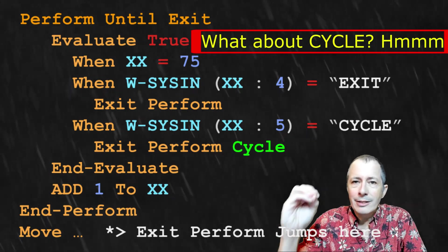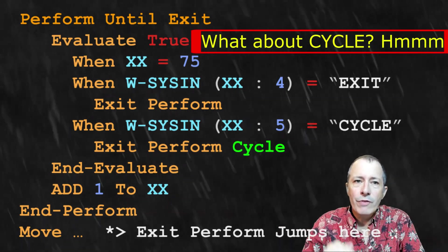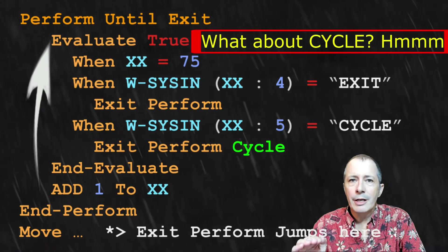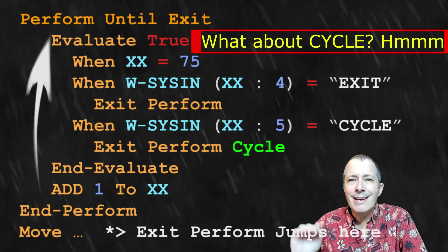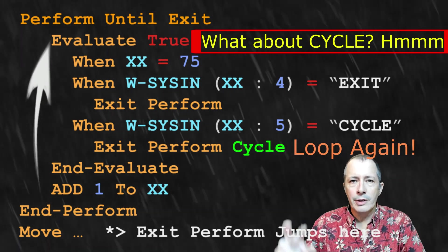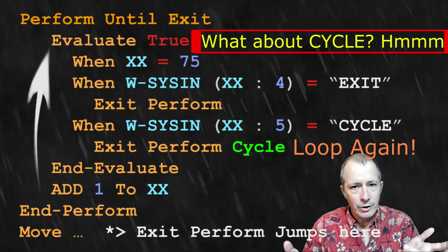When using exit perform cycle, the fields that are incremented need to be done before any condition that triggers the loop again action.